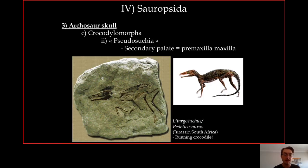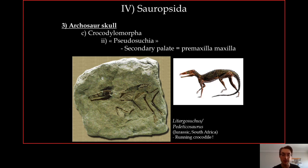The basalmost crocodilomorphs are the Protosuchia, where only the premaxilla and maxilla are involved in the secondary palate. Despite being the most basal group, they were diverse. For example, Litargosuchus has very long, slender limbs — it was probably a running, galloping crocodile, which would have been quite scary, though fortunately it was not too big.